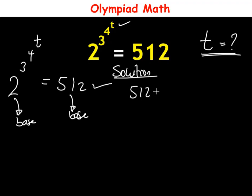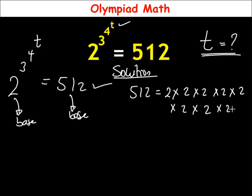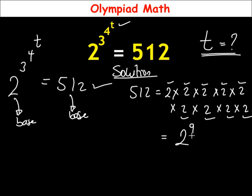To do this: 2 × 2 = 4, × 2 = 8, × 2 = 16, × 2 = 32, × 2 = 64, × 2 = 128, × 2 = 256, × 2 = 512. Counting the factors of 2, we have 1, 2, 3, 4, 5, 6, 7, 8, 9 — so 512 equals 2 raised to power 9.